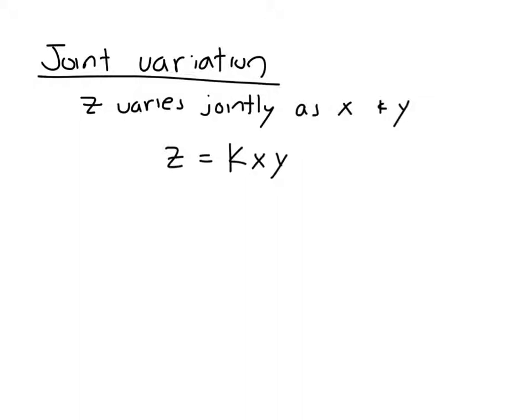In this video we're going to talk about joint variation. So z varies jointly as x and y. What does this mean? It means that z equals some constant times x times y. So that's what it means to vary jointly.